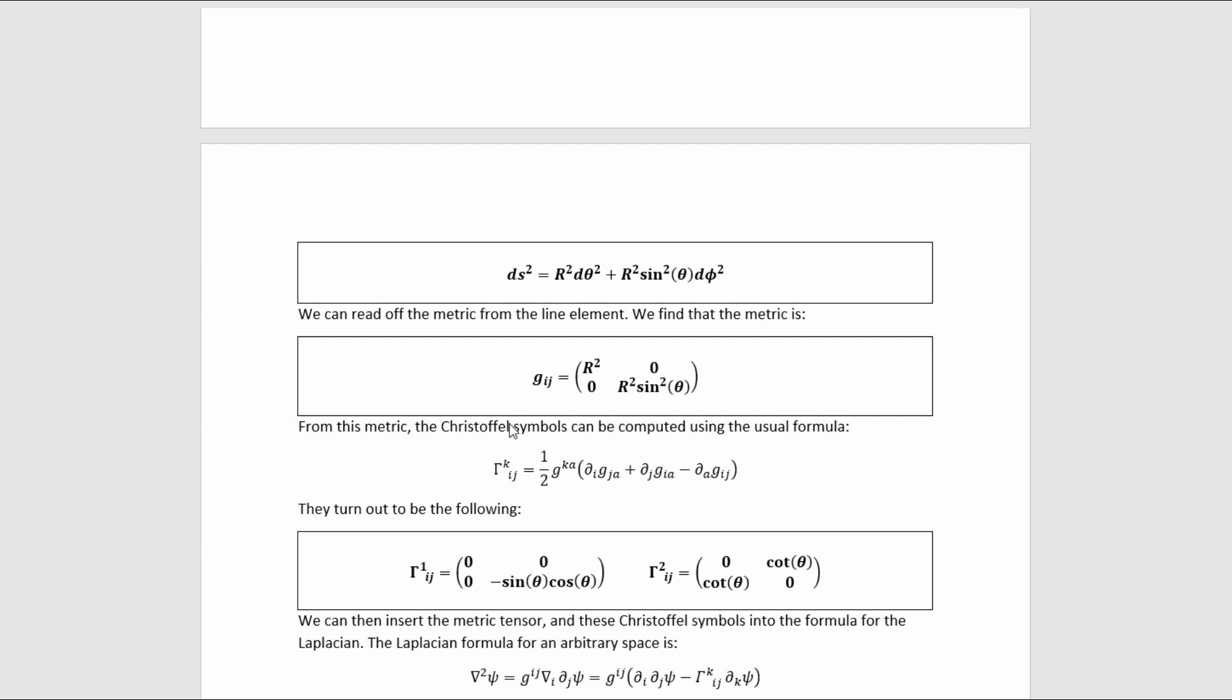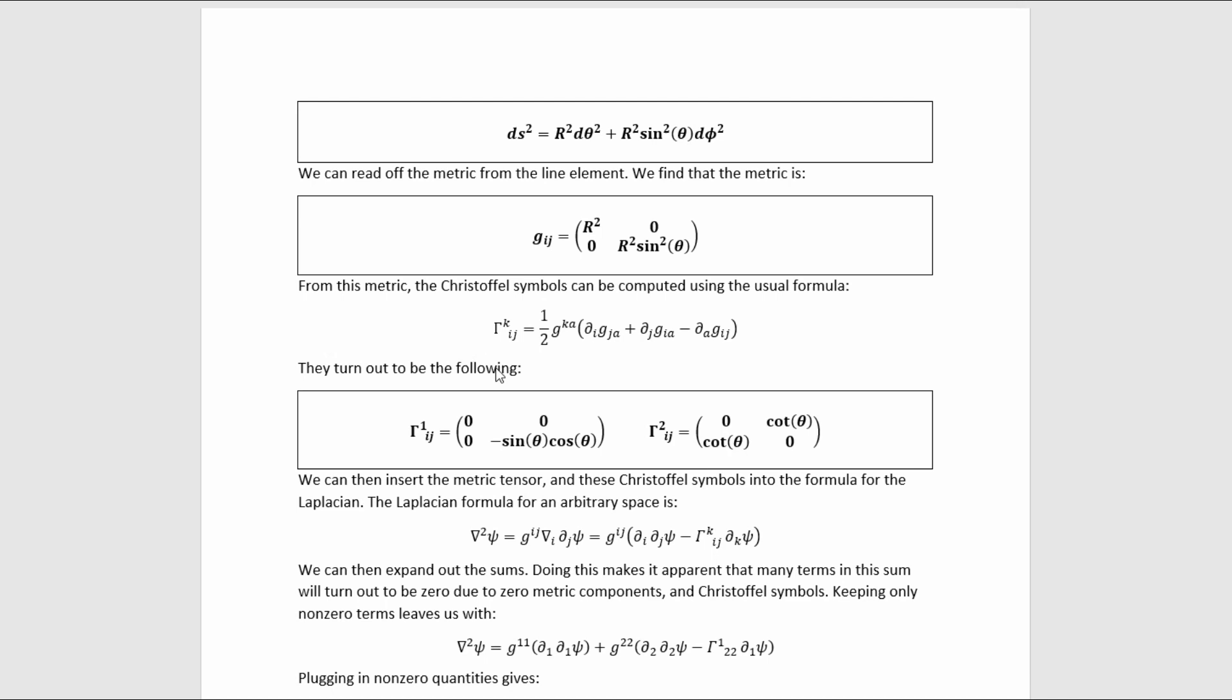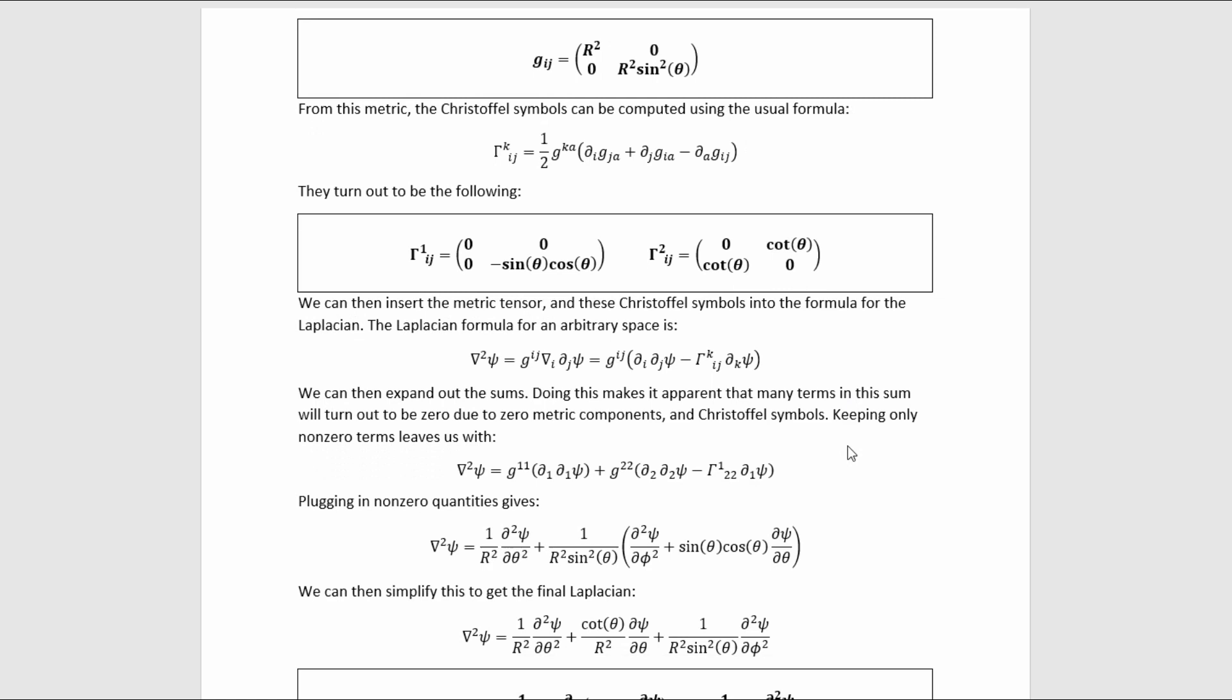We can then read off the metric tensor for the surface of a 2-sphere of radius capital R. We find the metric to be this. We can then insert that into the Christoffel symbols given by this formula. We find these results for the Christoffel symbols with all the derivatives done.